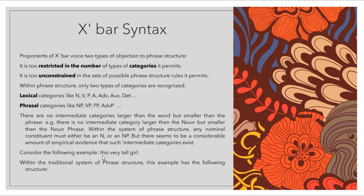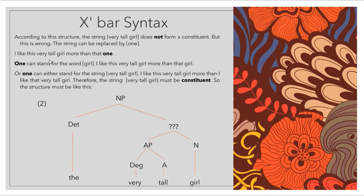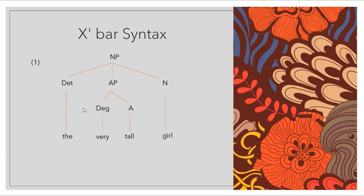Consider the following example: 'this very tall girl.' Within the traditional system of phrase structure, this example has the structure where NP consists of a determiner, an adjective phrase, and a noun. According to this structure, the string 'very tall girl' does not form a constituent — they are not under the same node. The adjective phrase and the noun are both placed under the NP, but 'very tall girl' is not grouped under a single node.